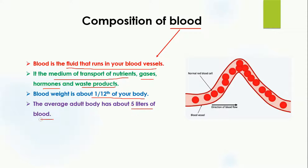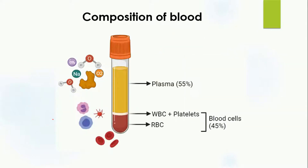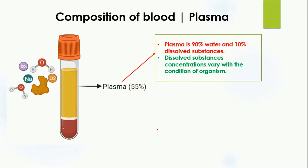In an average adult body, about 5 liters of blood is present. Blood is made up of plasma, which is 55%, and blood cells or cell-like bodies — white blood cells, platelets, and red blood cells — which make up 45%. So blood is divided into two parts: plasma, the liquid part, and blood cells, the solid part.